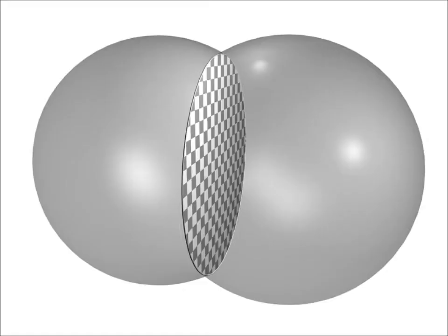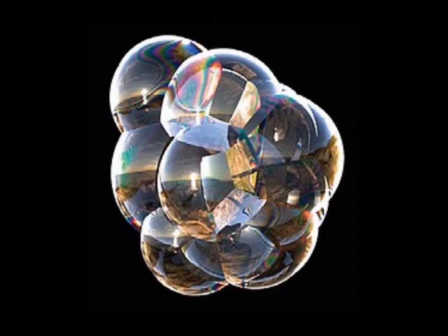When bubbles meet, they merge and share a common liquid wall, again, to minimize surface area. If bubbles that are the same size meet, their common wall will be flat. If they are different sizes, the smaller bubble will bulge into the larger one. Bubbles meet to form walls at an angle of 120 degrees, and if enough bubbles join, the cells will form hexagons.